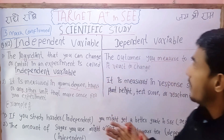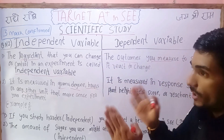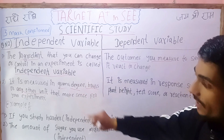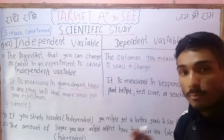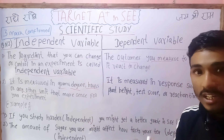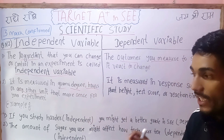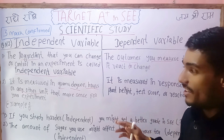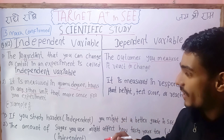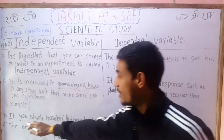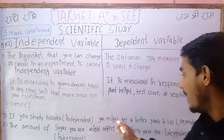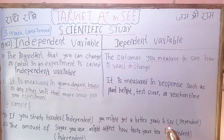Now let's write the independent variable or the dependent variable. In this example, if you study harder, you might get a better grade. In this case, the grade is the dependent variable.